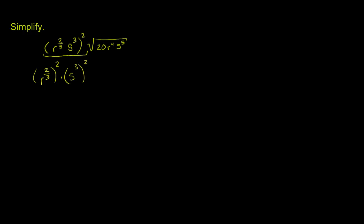Now let's look at this radical over here. We have the square root, but that's the exact same thing as raising something to the 1/2 power. So this part right here is the same thing as 20 — and let me write 20 as the product of a perfect square and a non-perfect square. So 20 is the same thing as 4 times 5, times r to the 4th, times s to the 5th.